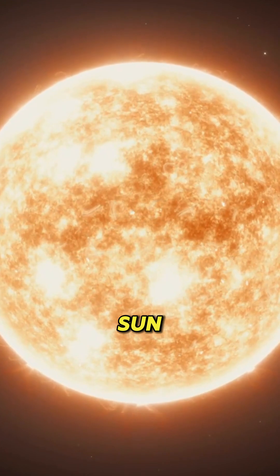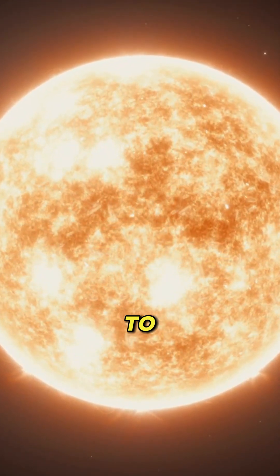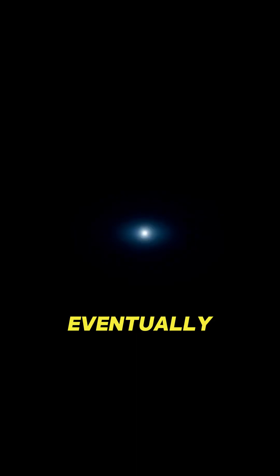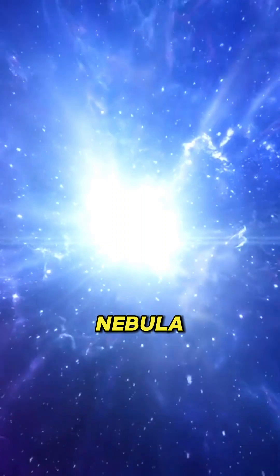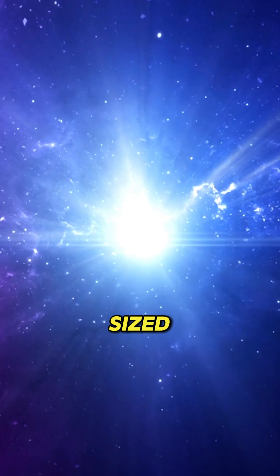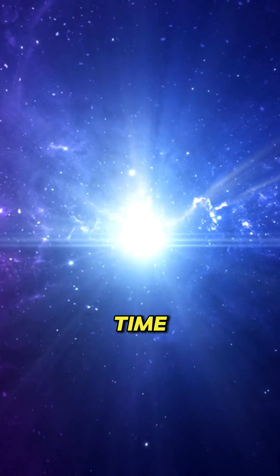For stars like our sun, the depletion of hydrogen leads to the fusion of helium into heavier elements such as carbon and oxygen. Eventually, these stars shed their outer layers, creating a beautiful planetary nebula, while the core cools and contracts into a white dwarf, a dense, Earth-sized remnant that gradually fades over time.